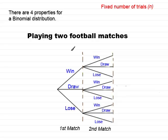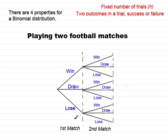What is the second property for a binomial distribution? Well, the second property is that we should have two outcomes in a trial — success or failure. Now in this particular tree diagram, in any trial, I haven't got two outcomes. The outcomes are winning, drawing, or losing — three outcomes. So this type of tree diagram is not suitable for a binomial distribution.